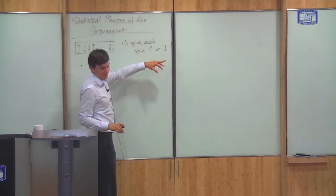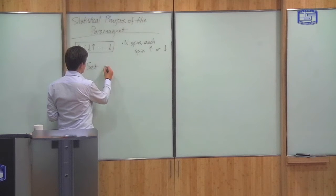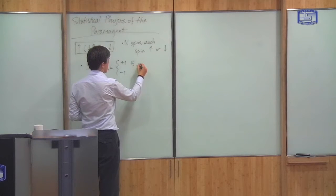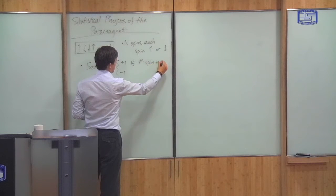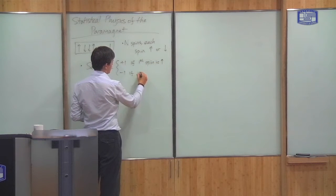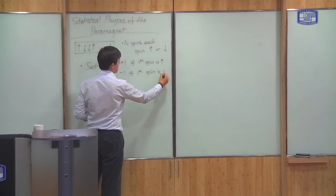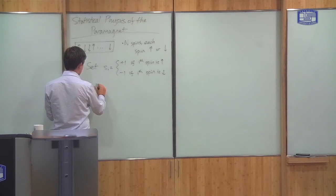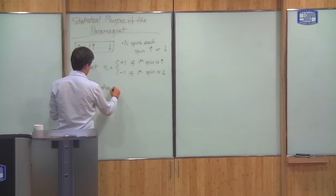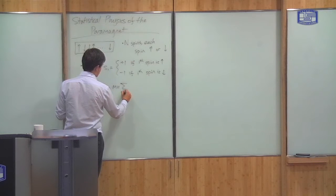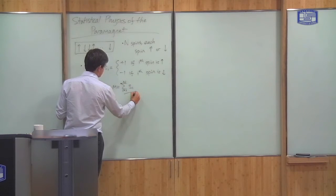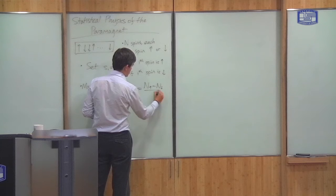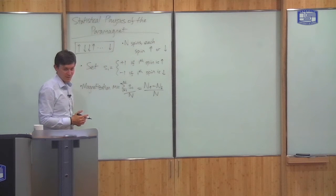Instead of up and down, I can label these spins as plus one or minus one: I set S_i to plus one if the i-th spin is up, and minus one if it is down. Then I define the magnetization as the average of these S_i's, which I can write as the number of up spins minus the number of down spins, divided by the total number of spins.